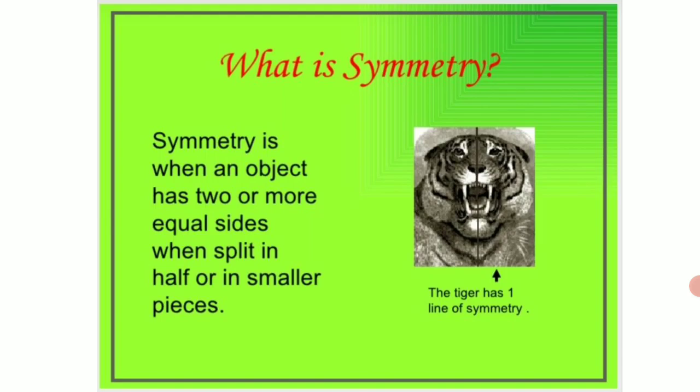What is symmetry? Symmetry is when an object has two or more equal sides when split in half or in smaller pieces. Here in the given slide children you can see the face of a tiger given which is divided into a vertical symmetry and it is written the tiger has one line of symmetry.